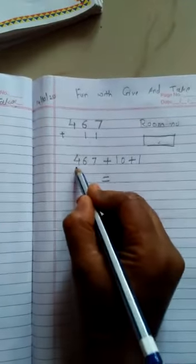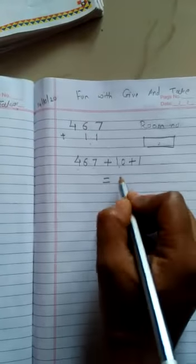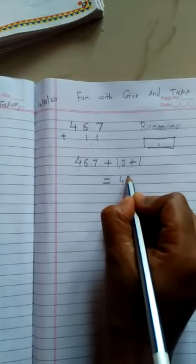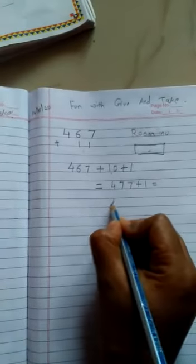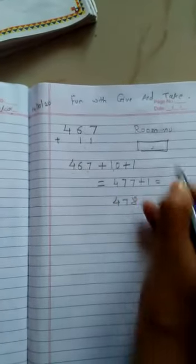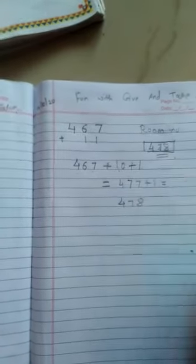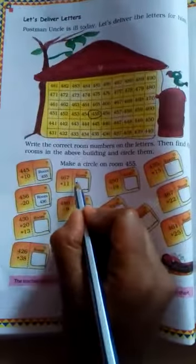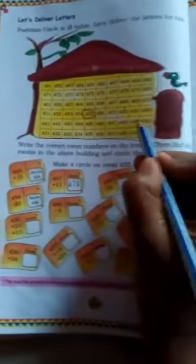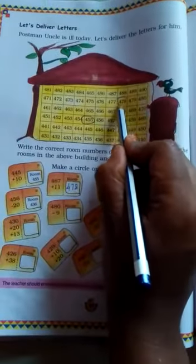So that is 467 plus 10 is equal to 477 plus 1 is equal to 478. So the room number 478. Let's write down here 478 and find out the room number 478 and circle that room number.